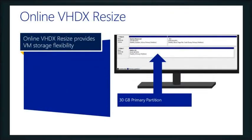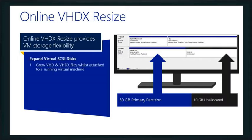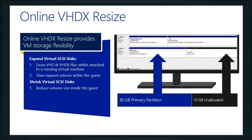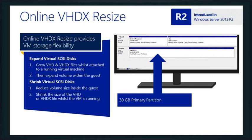Speaking of VHD files — specifically VHDX files — we can actually resize them dynamically online. This is something we introduced with R2. We can even shrink them online as well. So we can grow and shrink our VHDX files dynamically through our tools. VMware had the ability to grow for a while, and we just added it too. I don't think VMware can shrink yet, but we can now grow and shrink VHDs online.